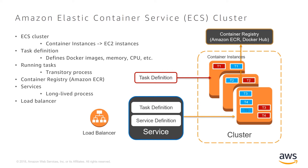Now, if our container is a web server, we probably want to tie all these tasks to a load balancer to provide one URL endpoint and spread the traffic across all of the tasks. The service will register the healthy tasks to the load balancer and will deregister them if any of the tasks become unhealthy. Once they are registered, the load balancer will take care of sending the traffic to the tasks running our container.